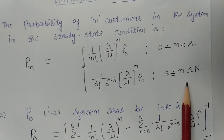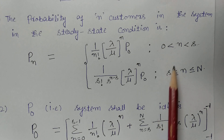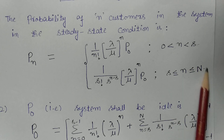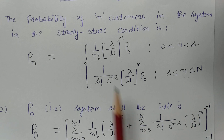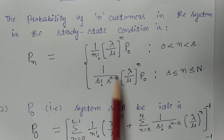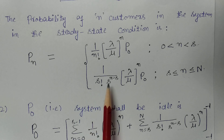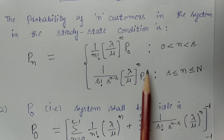When the number of customers N is greater than or equal to the number of servers S and less than or equal to the full capacity, where capital N represents the full capacity of the system, the formula becomes P_N = (1/S!) × S^(N−S) × (λ/μ)^N × P_0.